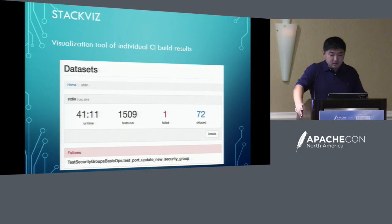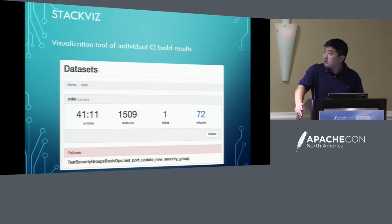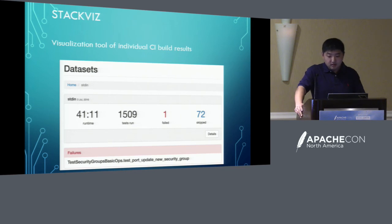Another tool is called StackViz. This tool visualizes the individual CI test results. At a high level it shows the test results running time, how many test cases ran, how many failed, and how many were skipped. You can also drill down into each test to check each test case's running time and which ones failed.